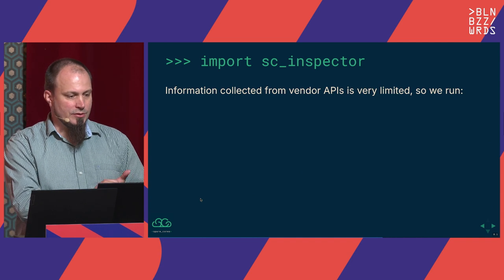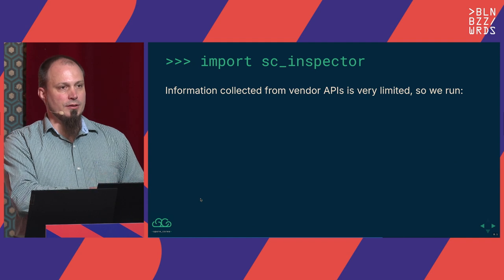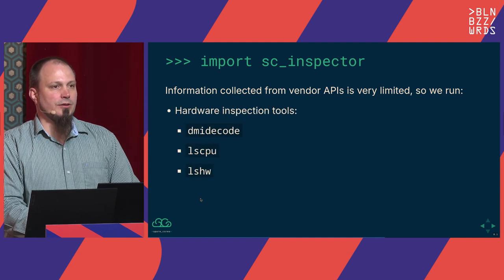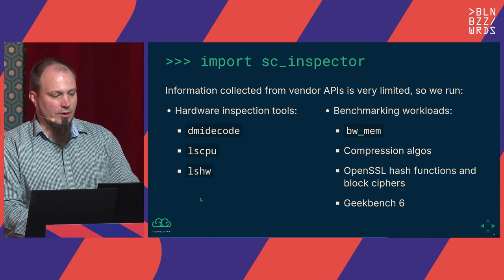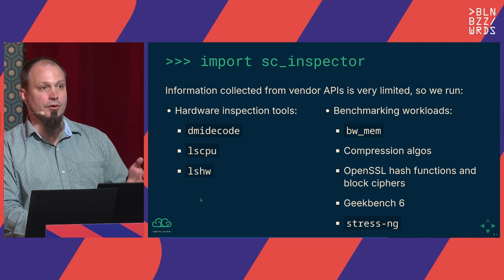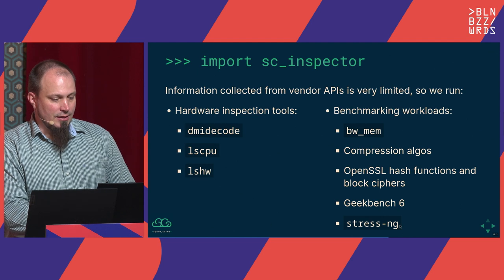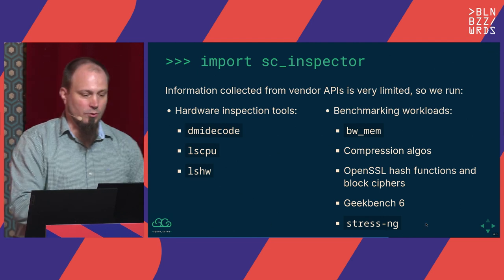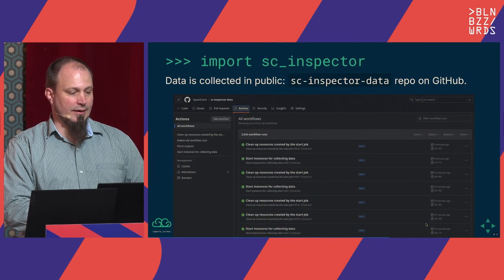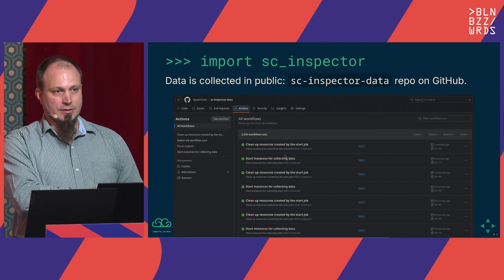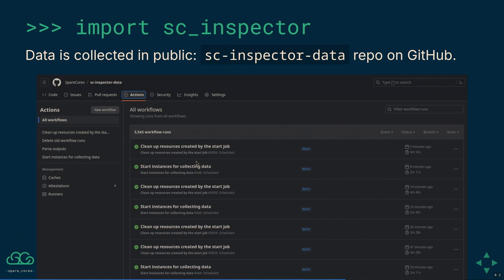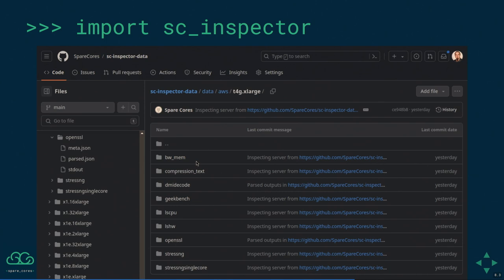The next component, probably the most exciting for this project, is the inspector — we actually run things on all these servers. For hardware inspection tools, you can see the list of what we run, and we also run different benchmarks. StressNG seems to be one of the best tools to measure single-core and multi-core performance of the server. This runs on GitHub Actions — you can see all the jobs creating the cloud servers, running the benchmarks, parsing the results, and then cleaning up by terminating all cloud servers. The data is not only provided as a SQLite database, but we commit everything back to GitHub, so in a folder structure you can find all instance types, benchmarks, hardware inspection tool outputs, parsed results, and metadata.